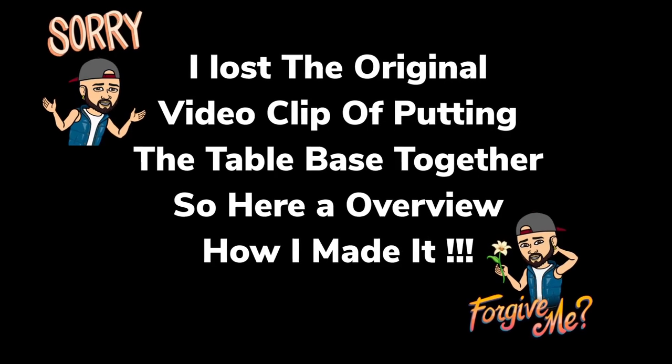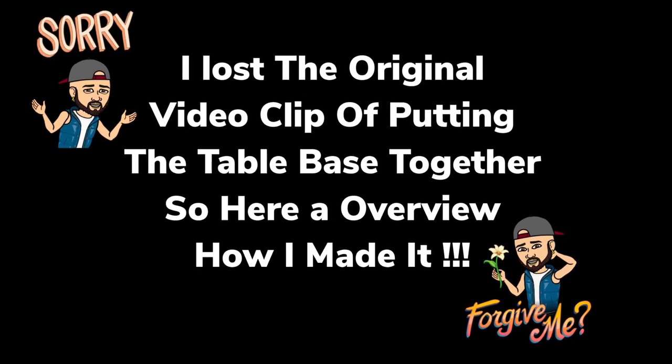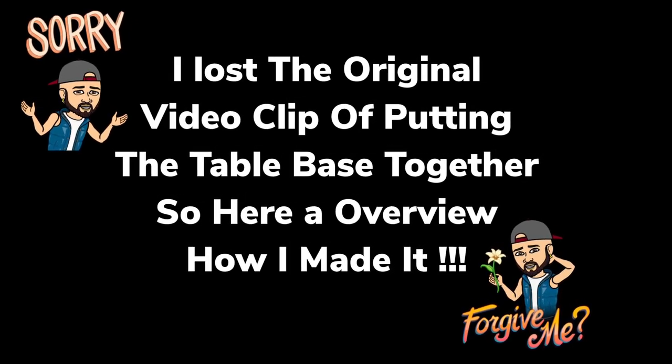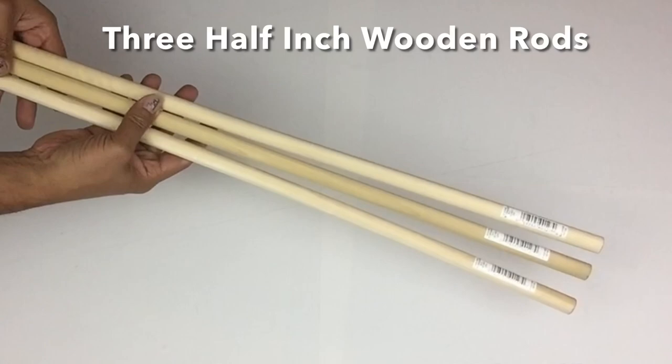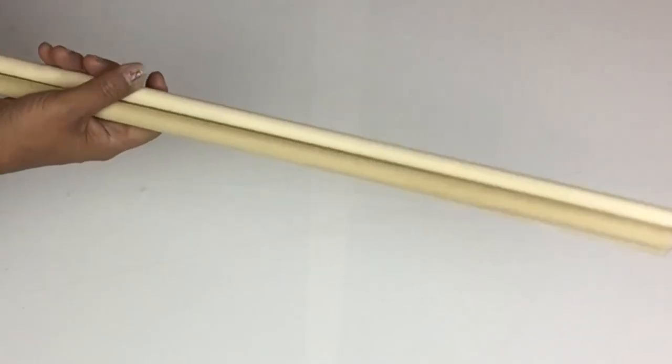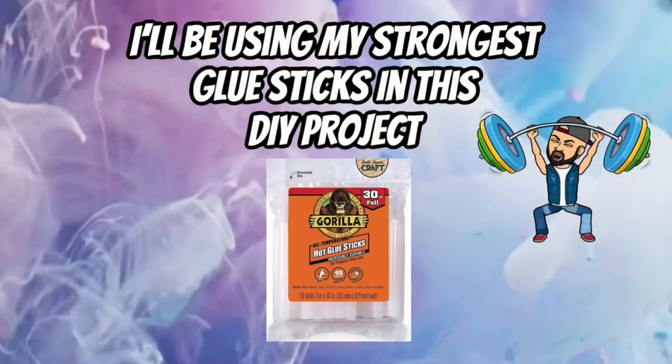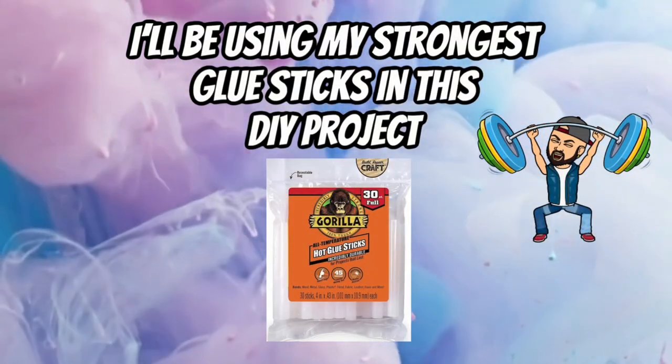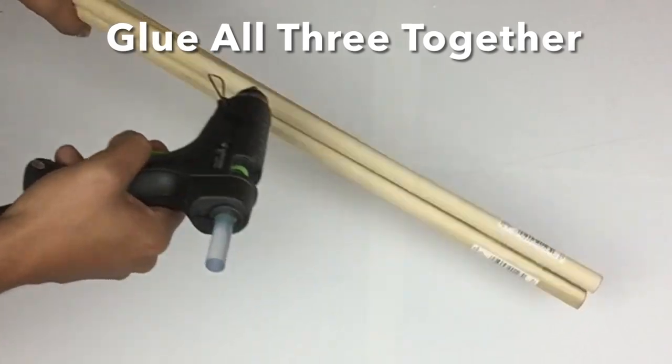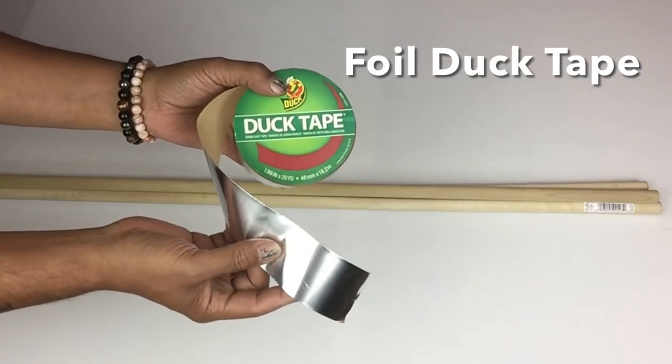I lost the original video clip of putting the table base together, so here's an overview on how I made it. I started off with three half-inch wooden rods. For the remainder of this DIY I'll be using my strongest glue sticks. Next I took all the rods and glued them together, then I covered them with foil duct tape.